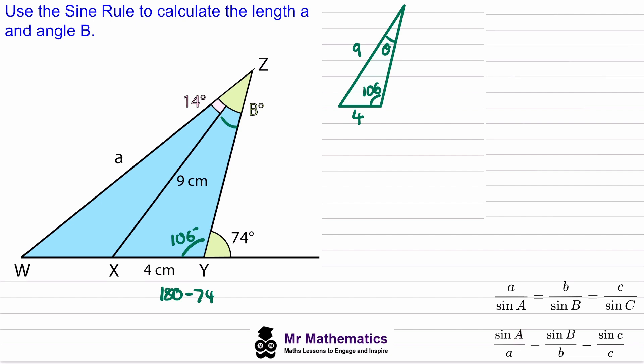So we'll say sine of the angle 106 divided by its opposite length 9 is equal to the sine of theta which is this angle here over its opposite length which is 4.